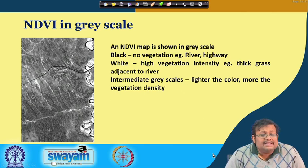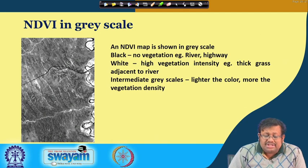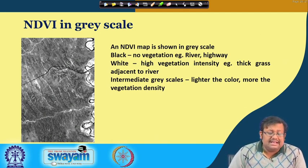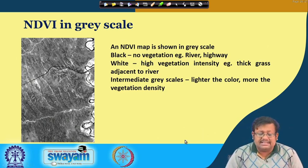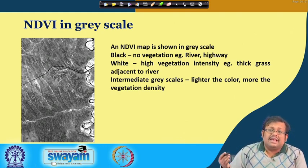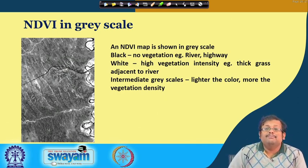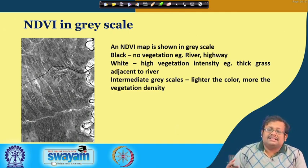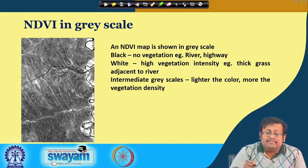In a grayscale NDVI map, black means no vegetation — for example rivers and highways — while white means high vegetation intensity such as thick grass adjacent to a river. Intermediate grayscales indicate intermediate vegetation density. NDVI has become a very important tool for identifying vegetation characteristics and density, and all this information can be gathered from remote sensing data.